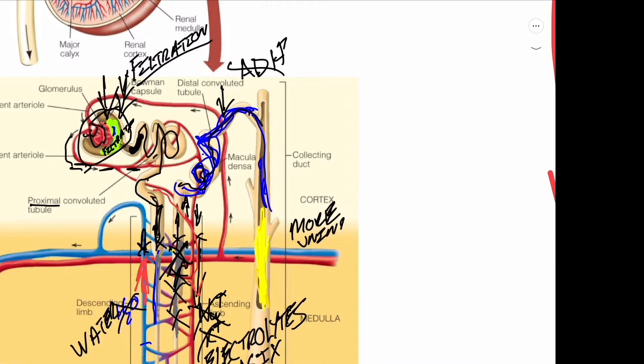If you have no antidiuretic hormone, lots of filtrate will be made. If you have antidiuretic hormone, water will be reabsorbed from that distal convoluted tubule. Then everything that's in the collecting duct is called urine.